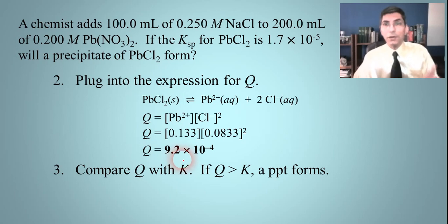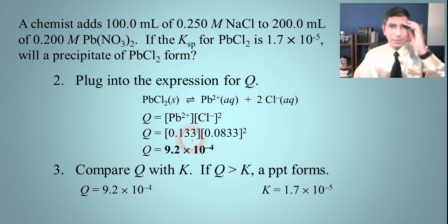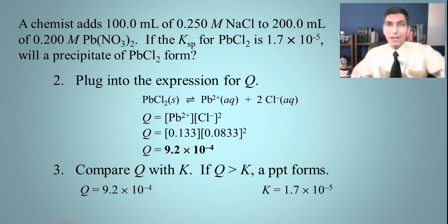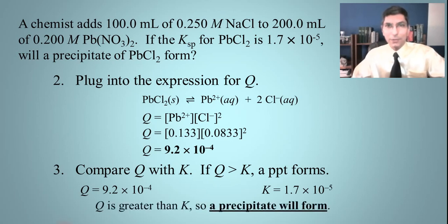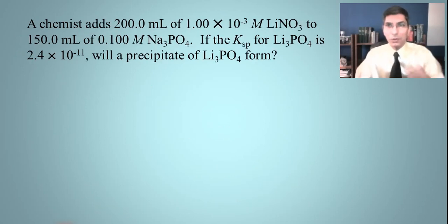Now we compare Q with K. Q is 9.2 times 10 to the negative fourth, and K is given in the problem as 1.7 times 10 to the negative fifth. Q is greater than K — it's not a whole lot larger, but Q is greater. That means we're going to make a precipitate. So if we're mixing these solutions together, we can safely predict that we will make a precipitate of lead(II) chloride.